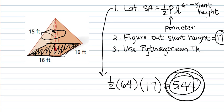I'm going to find the area of this square right here, so it's 16 by 16, area of a square is length times width, so 16 times 16 is 256.